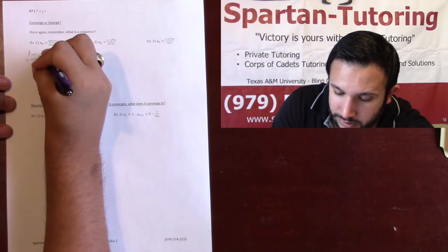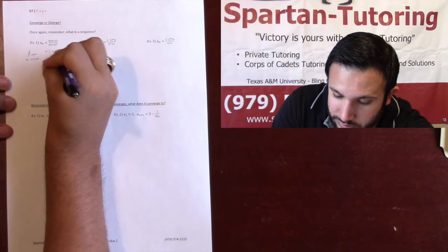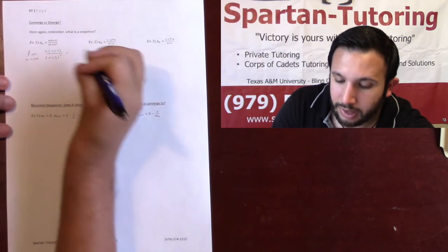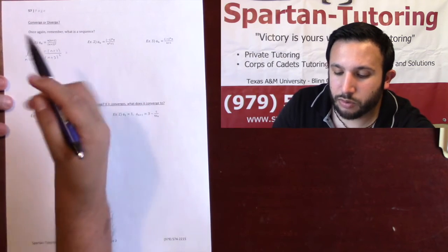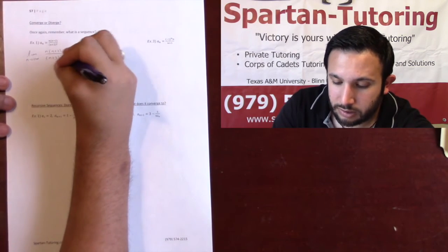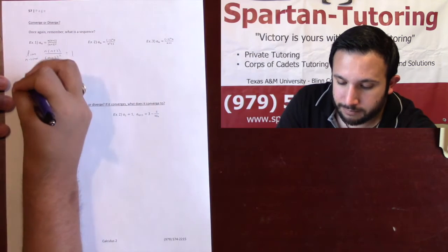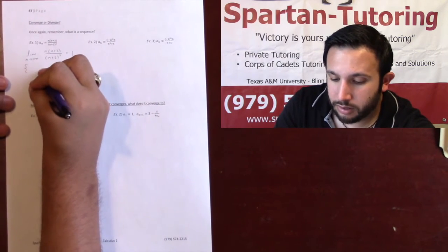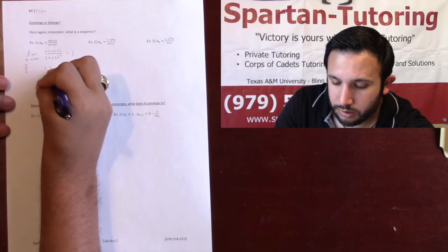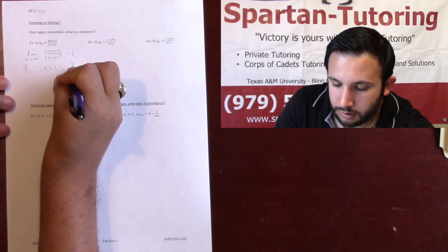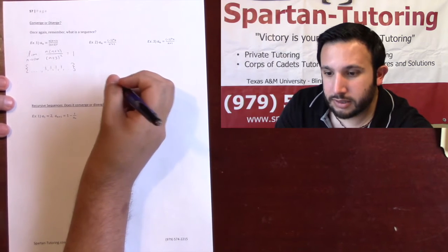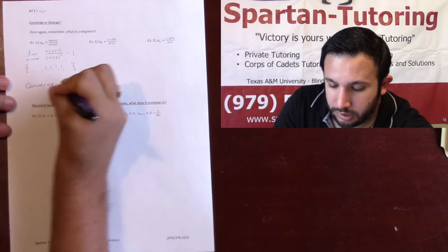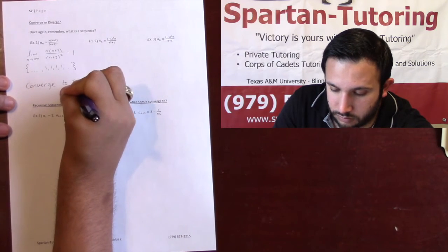For example one: take the limit as n approaches infinity of n(n+2)/(n+3)². The highest term on top is n² and on bottom is also n² — same over same, so take the coefficients, which gives 1. Out at infinity, the list is going 1, 1, 1, 1 — so the sequence converges, and more specifically, converges to 1.